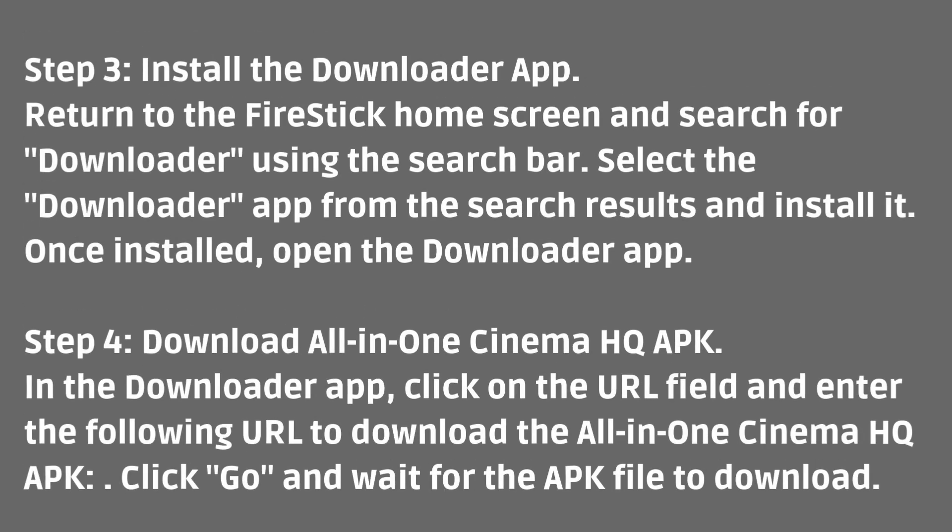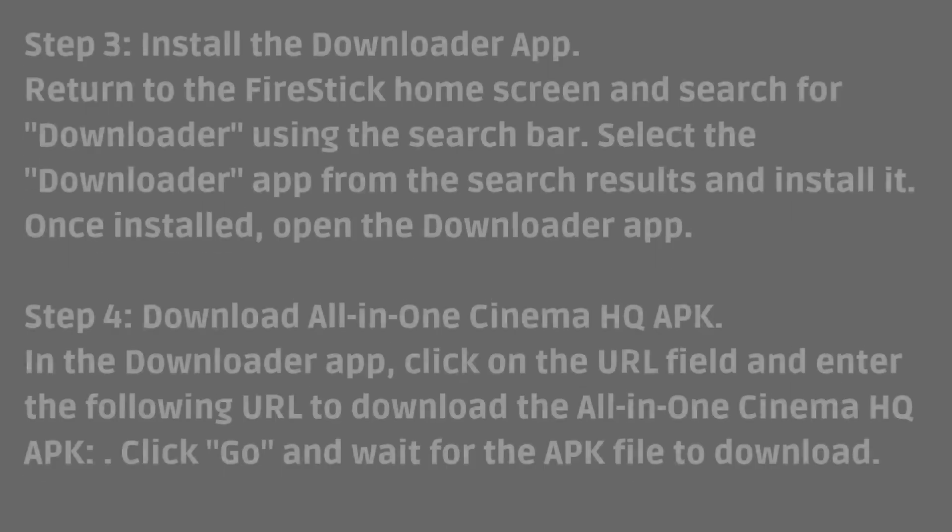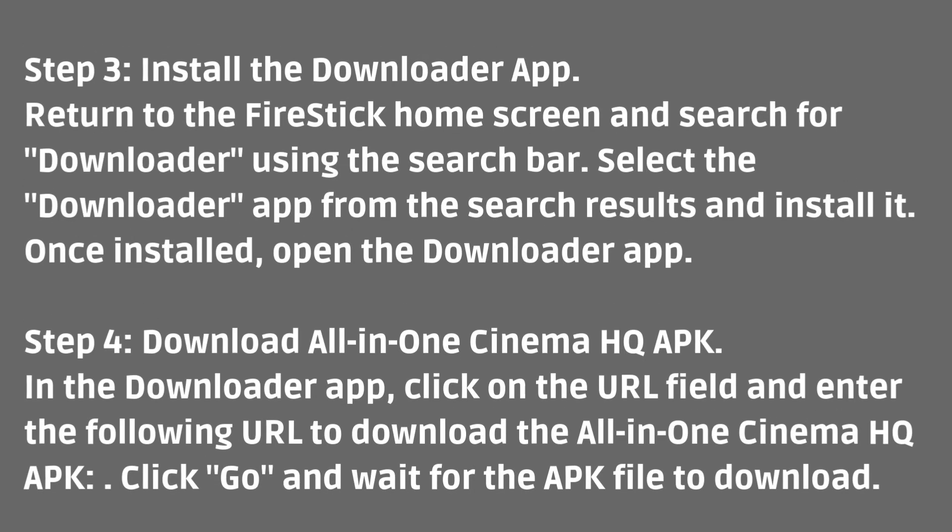Step 4: Download the All-in-One Cinema HQ APK. In the Downloader app, click on the URL field and enter the following URL to download the All-in-One Cinema HQ APK. Click Go and wait for the APK file to download.